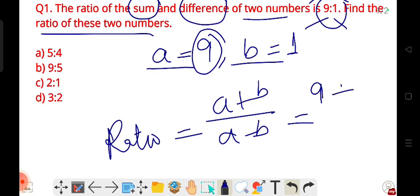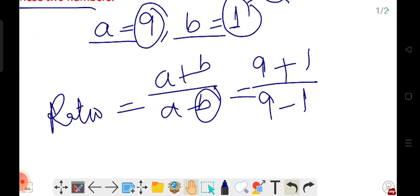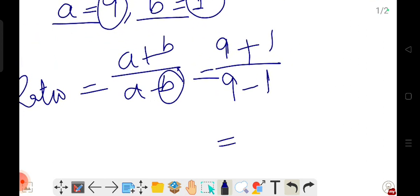What is it? A is 9, 9 plus B is 1, divided by A which is 9, minus B which is 1. So ultimately we get 9 plus 1 equals 10. 9 minus 1 equals 8.